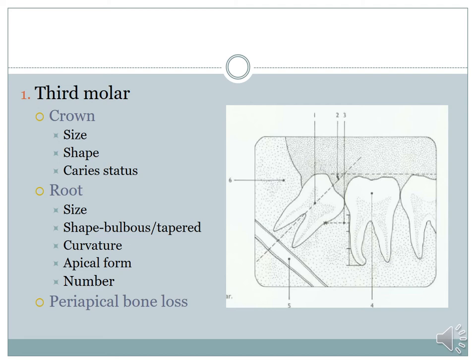To put it simply, a short root that is not tapered, not curved, with two roots will be an easy extraction, whereas all other variations will have some form of complication. So when looking at root morphology, these things have to be assessed carefully for treatment planning.